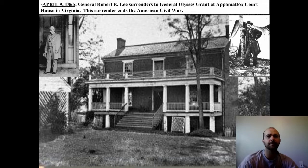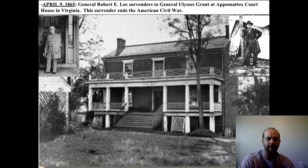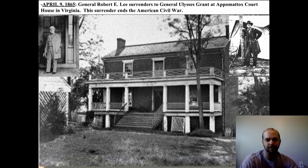On April 9, 1865, General Robert E. Lee, commander of the Confederate troops, surrendered to General Ulysses Grant, commander of the United States troops, at a place called Appomattox Courthouse in Virginia. That surrender ended the Civil War and brought the South back into the Union.